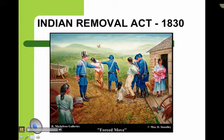Another issue in pushing west is what to do with the Native Americans. Congress, with Jackson's support, passed the Indian Removal Act of 1830, which funded treaties that forced the tribes west. The Cherokee Tribe in Georgia refused and were actually supported by the Supreme Court, but Jackson refused to abide by the court decision. Jackson said that Chief Justice John Marshall had made his decision — now let him enforce it.